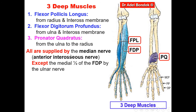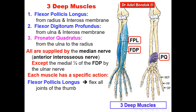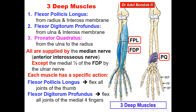Regarding the nerve supply of the deep muscles: all of them are supplied by the anterior interosseous branch of the median nerve, except the medial half of the flexor digitorum profundus, which is supplied by the ulnar nerve. So: flexor pollicis longus by the anterior interosseous nerve; pronator quadratus by the anterior interosseous nerve; flexor digitorum profundus — medial half by the ulnar nerve, lateral half by the anterior interosseous nerve. Regarding the action: flexor pollicis longus — flexion of all joints of the thumb; flexor digitorum profundus — flexion of all joints of the medial four fingers; and pronator quadratus — pronation of the forearm.